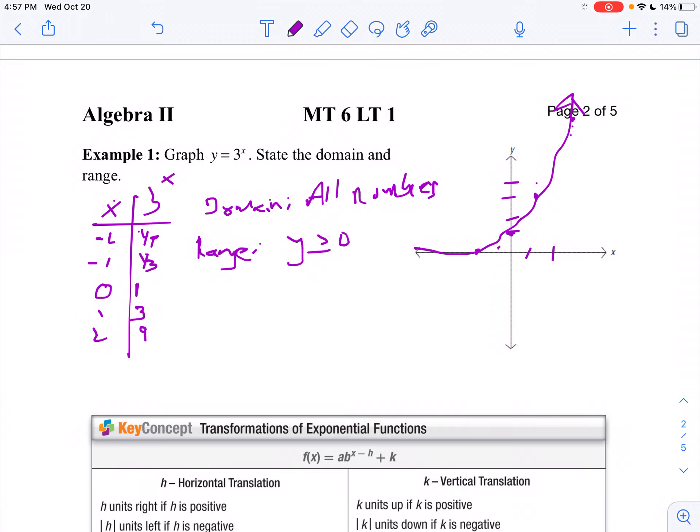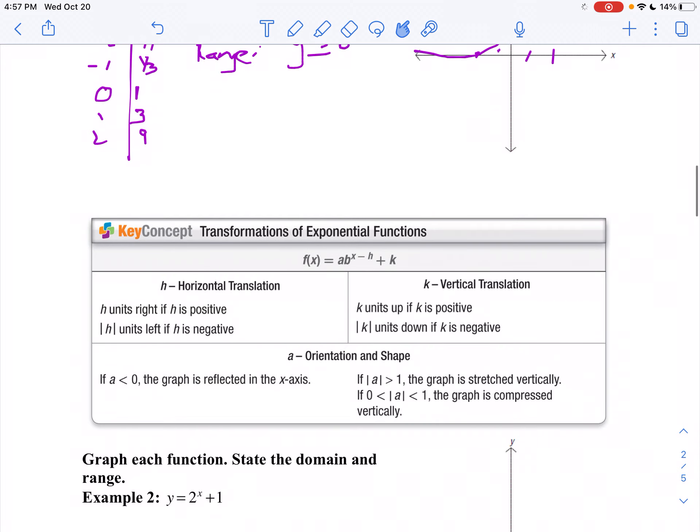Now just like we did in every other unit with transformations, exponentials have their own transformations. If you subtract from the exponent, you're going to move your graph left and right horizontally. It's x minus h. If you add k, it's a vertical translation, so you're going to move your graph up. And if you have a number in front of a that's not 1, if it's less than zero we're going to reflect it over the x-axis. If the absolute value is between 0 and 1, you're going to compress it vertically. And if it's bigger than 1, we're going to stretch it vertically.